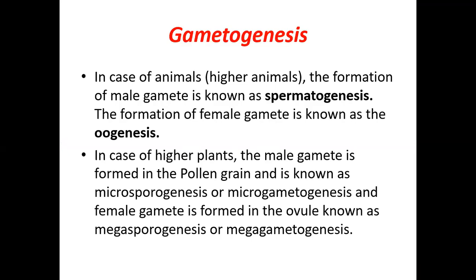To recap what we have studied: in sexual reproduction, gametogenesis occurs, then fertilization, then embryogenesis. We also learned about the sexuality of both plants and animals — bisexual and unisexual flowers, and hermaphrodite and unisexual animals.